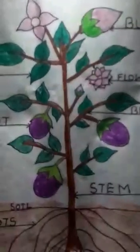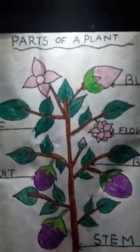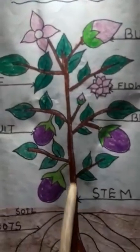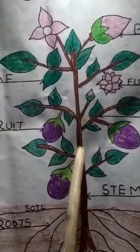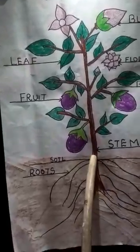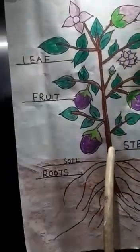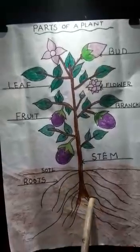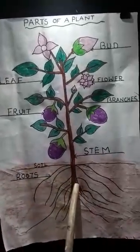Now we come to the stem. Stem is very important for a plant because it helps the plant to stand upright. This brown portion is called the stem. It helps the plant to stand upright, and it also delivers water and nutrients from the roots to the different parts of the plant. It also carries food from the leaves to the different parts of the plant.